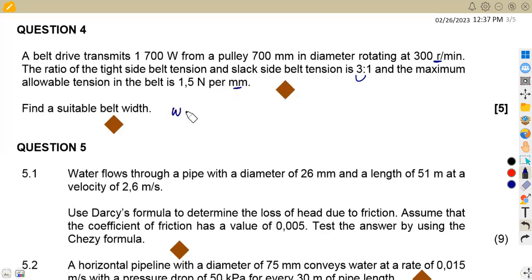So find the suitable belt width in this case. From the 1.5 Newton per millimeter, the width can be taken as T1 over 1.5. So if we are to find T1, how can we find T1? From this information, we can see that we do not have T1. But we are given the power, let's list the information. We are given the power of the belt, which is 1,700 watts.